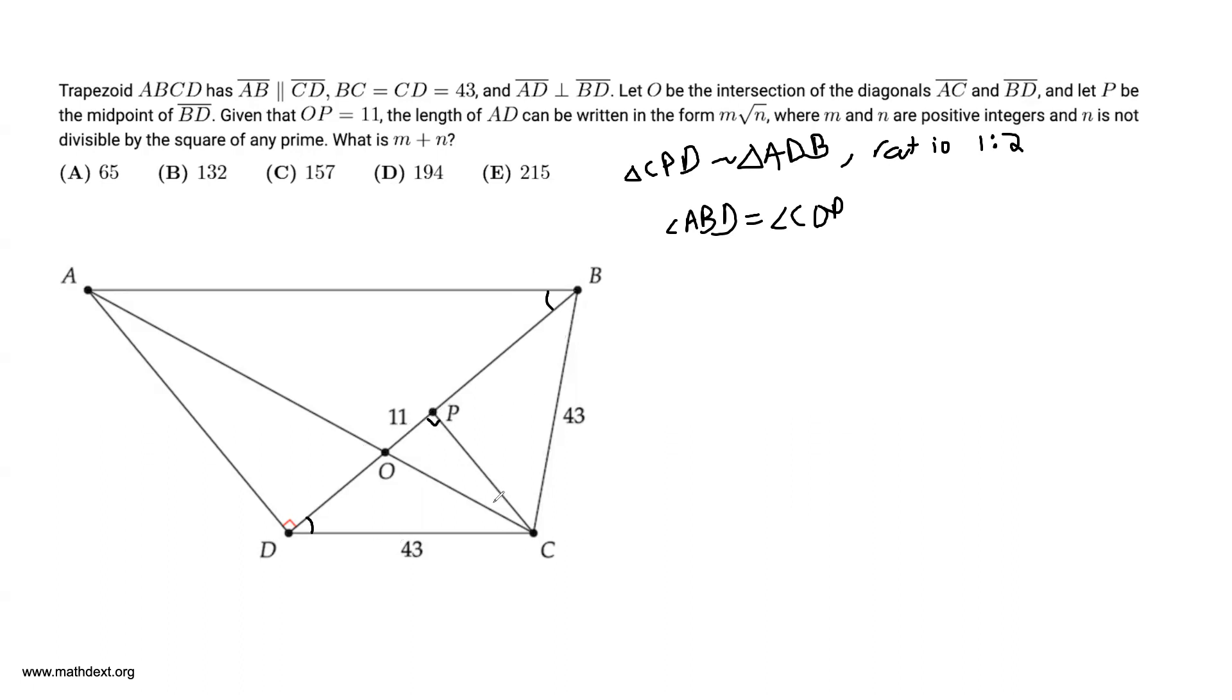You can prove this via similar triangles: PD equals BP, CD equals BC, and CP is equal to itself. This angle turns out to be right and therefore angle ADB is equal to angle CPD.